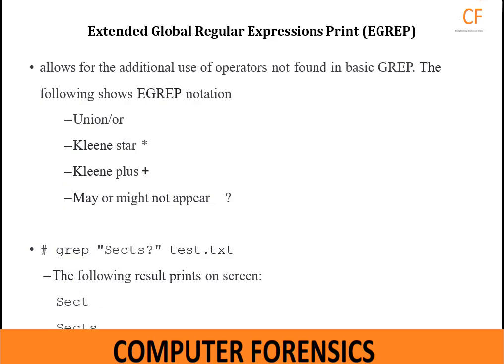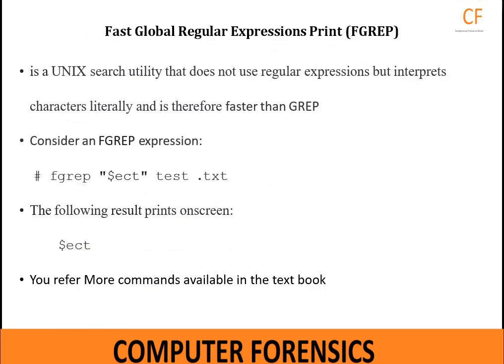Extended Global Regular Expression Print (EGREP) allows for additional use of operators not found in basic GREP. The following EGREP notations are available: union or clean star (*), clean plus (+), and the question mark which means the previous character may or may not appear. For example: grep sect? test.txt — the following result prints on screen: sect, anti-sect. Fast Global Regular Expression Print (FGREP) is a UNIX search utility that does not use regular expressions but interprets characters literally, and is therefore faster than GREP.